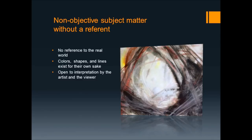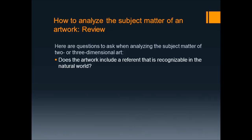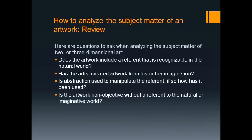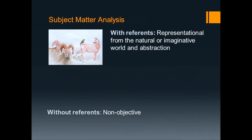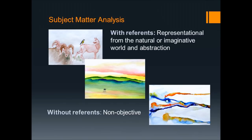Let's review. When you need to analyze the subject matter of a work of art, start by asking these questions: Does the artwork include a referent that is recognizable in the natural world? Has the artist created artwork from his or her imagination? Is abstraction used to manipulate the referent, and if so, how has it been used? Is the artwork non-objective, without a referent to the natural or imaginative world? Remember, art with a referent is representational from the natural world or the imaginative world. Abstraction can be used to manipulate the referent in some way. Non-objective art does not have a referent because it uses the elements and principles of design to create an image or object for its own sake.